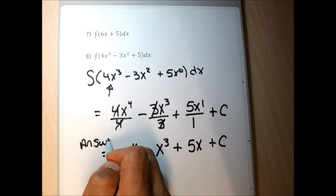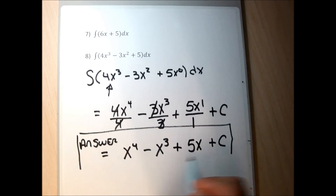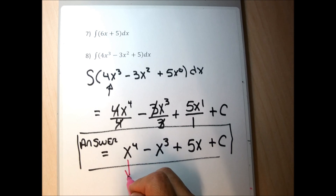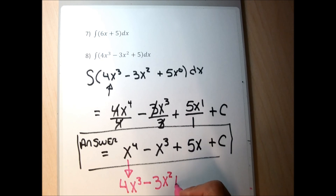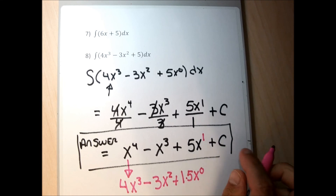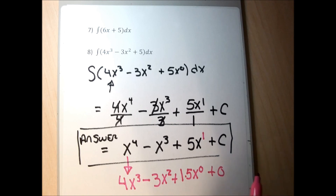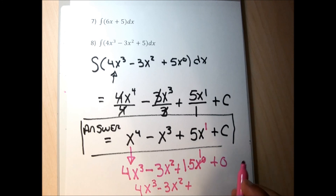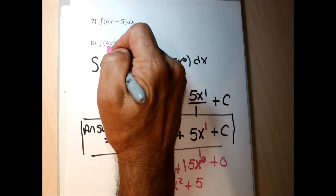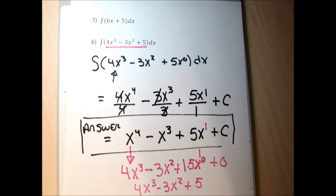Checking: the derivative of x to the fourth is 4x cubed; the derivative of minus x cubed is minus 3x squared; the derivative of 5x is 5 times 1 times x to the zero, which is 5; and the derivative of C is 0. So the derivative of our answer is 4x cubed minus 3x squared plus 5 — exactly what's between the integral symbol and the dx.